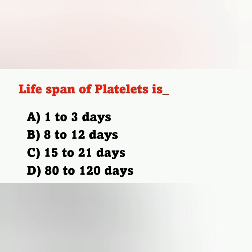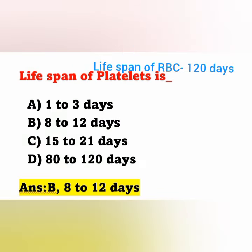First question: the lifespan of a platelet. Options — A: 1 to 3 days, B: 8 to 12 days, C: 15 to 21 days, D: 80 to 120 days. The average lifespan of a platelet is about 8 to 14 days. Here option B, 8 to 12 days, is the correct answer. The average lifespan of RBC is 120 days.